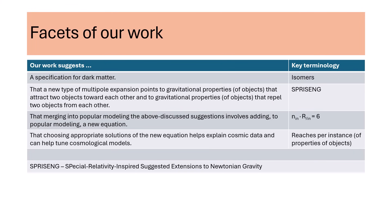Our work suggests a well-defined specification for dark matter elementary particles. The dark matter particles differ from ordinary matter elementary particles primarily only with respect to some might-be symmetries. We use the word isomers to associate with known elementary particles and with five sets of similar dark matter elementary particles. We suggest that a new type of multipole expansion points to gravitational properties of objects that attract two objects toward each other and to gravitational properties that repel two objects from each other. We associate the term 'surprising' with the phrase 'special relativity-inspired suggested extensions to Newtonian gravity.' Merging these suggestions into popular modeling involves adding a new equation involving two integers. We suggest that choosing appropriate solutions to the new equation helps explain cosmic data and can help tune cosmological models.